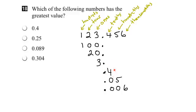So again, 0.4 is bigger than 0.05, and 0.05 is bigger than 0.006. Again, it all depends on the placeholder. Even though 6 is a bigger number than 5, 5 is in the hundredths column and 6 is in the thousandths column. So 0.05 is bigger than 0.006.